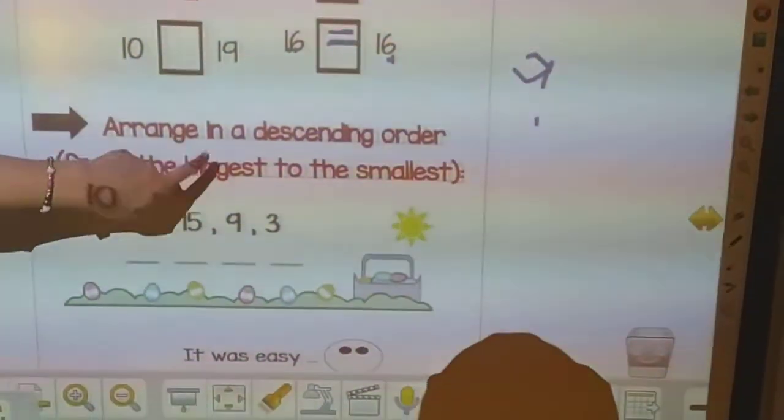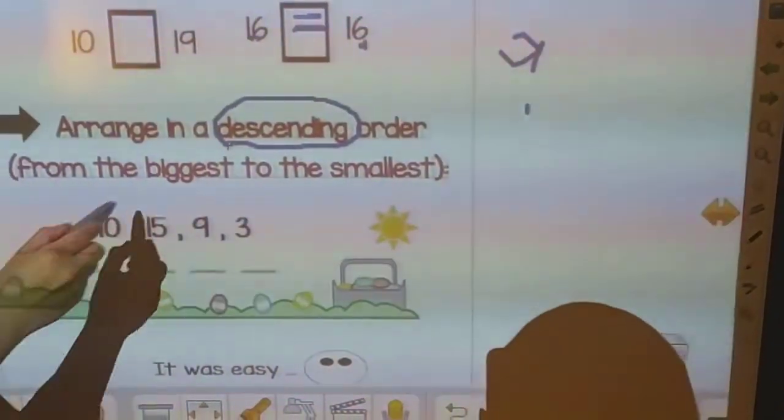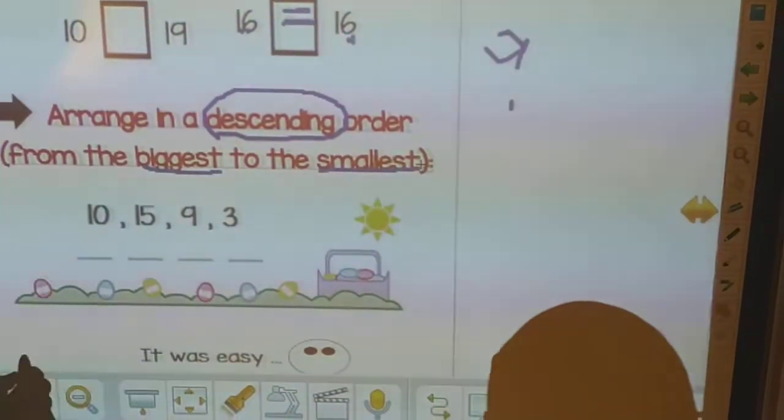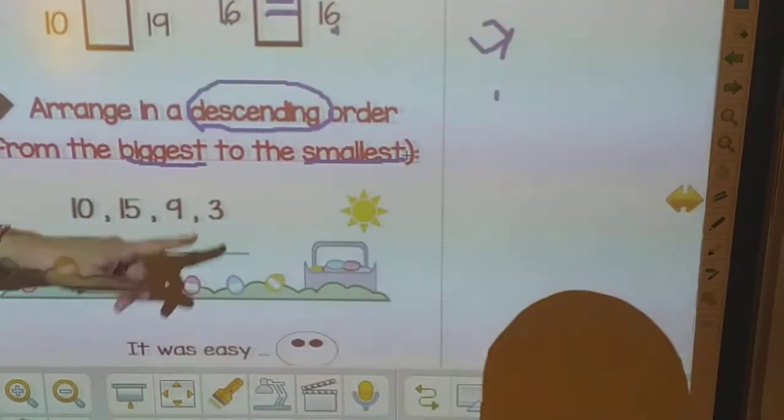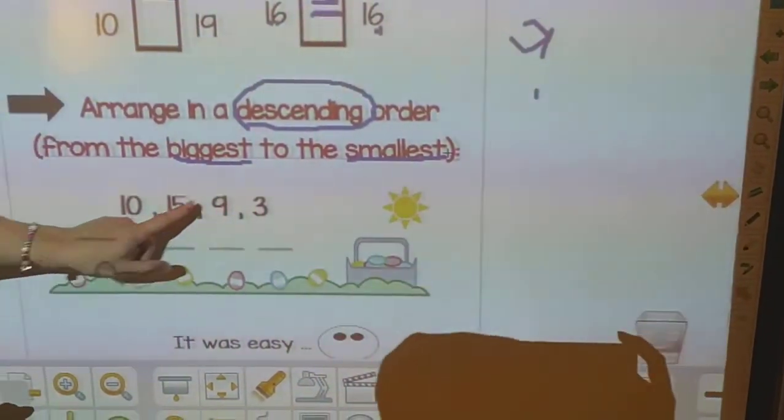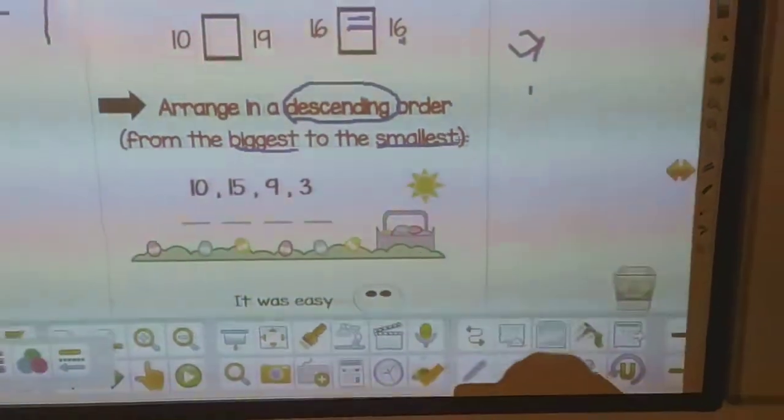Next question. Arrange in descending order. Descending means from the biggest to the smallest. I want you to arrange numbers from the big number to the smallest number.